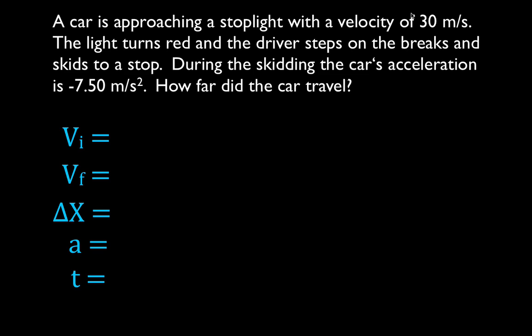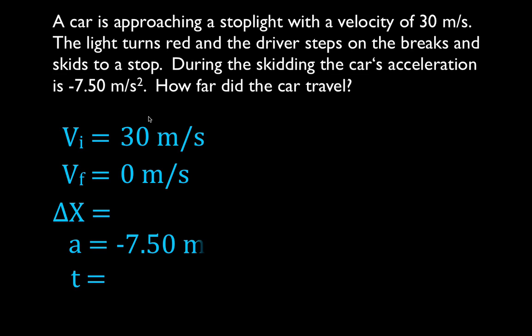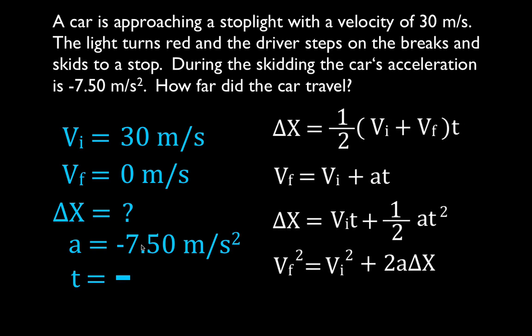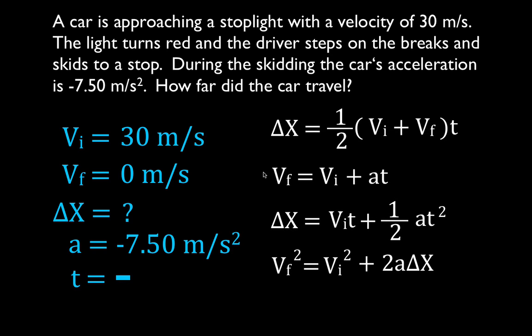The initial velocity — the car is moving — is 30 meters per second. The final velocity, because it skids to a stop, is 0 meters per second. We don't know the distance, but we're trying to solve for it. We do know the acceleration. We are not given the time and we are not solving for the time.